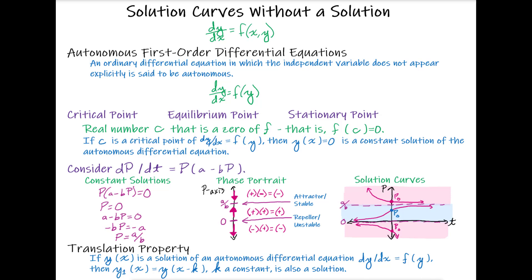Considering values for p less than zero, we'll find that p itself will be negative and a minus bp will be positive. So we'll have a negative value times a positive value, which will be a negative value for our derivative overall. That means our function will be decreasing, so we put a down arrow on that interval in our phase portrait. Our phase portrait is simply the p-axis with our constant solutions identified and arrows on each interval indicating what the function is doing.